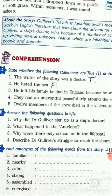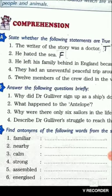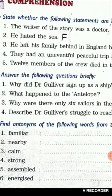Come to Exercise C: find antonyms of the following words from the story. Antonyms means opposite meaning words. So you have to look for these opposite meaning words from the chapter. You have to do the chapter reading again, and when you do the chapter reading this time, keep these words in mind and keep looking for the opposites. What is the opposite of: familiar, nearby, calm, strong, assembled, and energized.